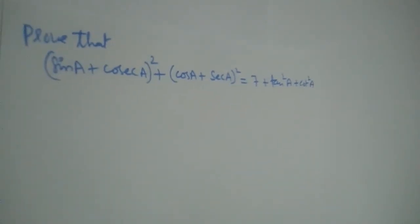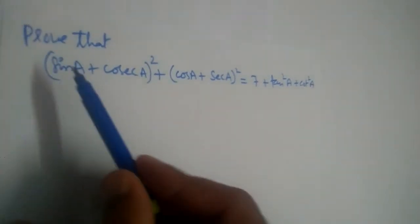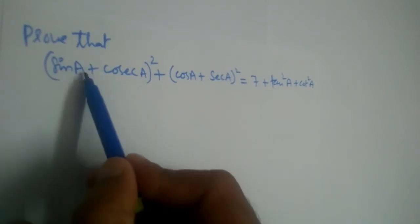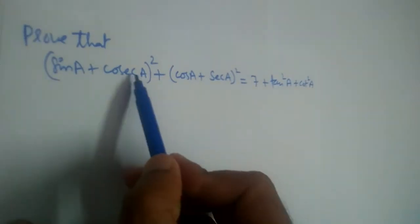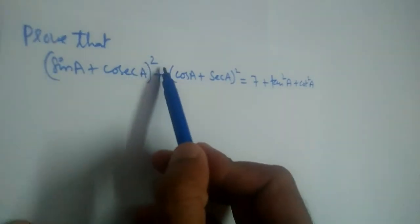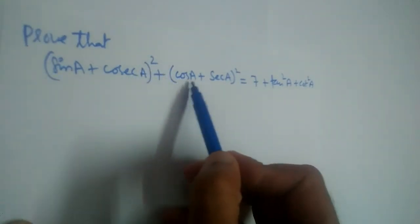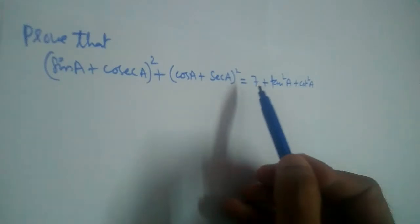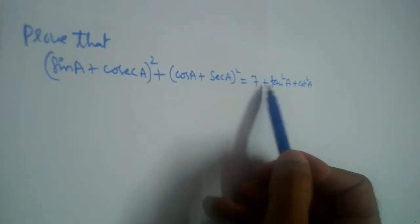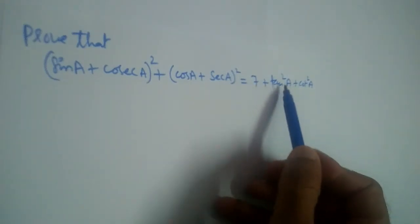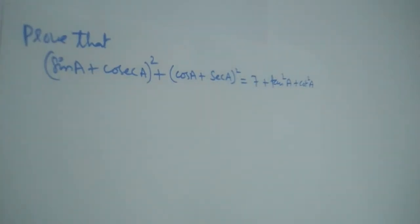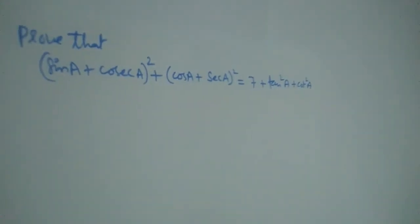Let us prove that (sin a + cosec a)² + (cos a + sec a)² is equal to 7 + tan²a + cot²a.